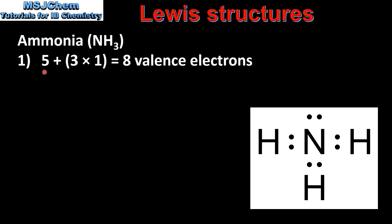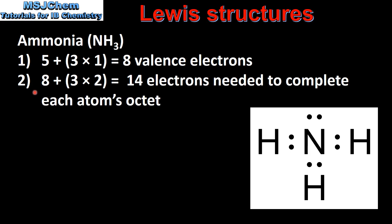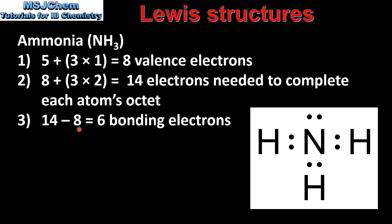The next example is ammonia. Nitrogen has 5 valence electrons and hydrogen has 1 valence electron, giving us a total of 8 valence electrons. Nitrogen needs 8 valence electrons to complete its octet and each hydrogen atom needs 2, which gives us 14 electrons needed to complete each atom's octet. In step 3 we subtract step 1 from step 2 to give us 6 bonding electrons in the molecule.